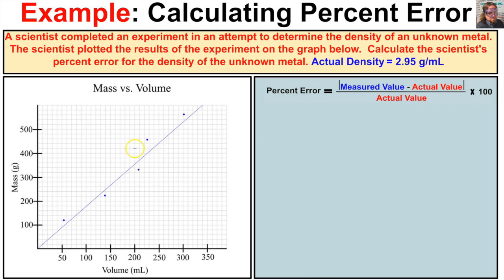So a scientist performs an experiment and plots the mass and volume of these unknown metals on this graph. The mass is on the y-axis in grams and the volume of the metal is on the x-axis in milliliters. The scientist plots the mass and volume of the metal in trial one, trial two, trial three, trial four, and trial five — five trials total.